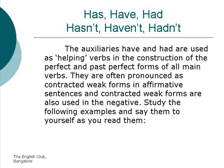The auxiliaries 'have' and 'had' are used as helping verbs in the construction of the perfect and past perfect forms of all main verbs. They are often pronounced as contracted weak forms in affirmative sentences, and contracted weak forms are also used in the negative. Study the following examples and say them to yourself as you read them.